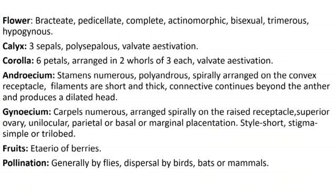The flower is bracteate, pedicellate, complete — i.e. all floral parts are present — actinomorphic (symmetrical flower), bisexual — i.e. both male and female characters are present — trimerous and hypogynous, i.e. superior ovary. Calyx: 3 sepals, polysepalous, i.e. sepals are free, with valvate aestivation. Corolla: 6 petals, arranged in 2 whorls of 3 each with valvate aestivation.